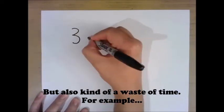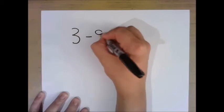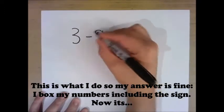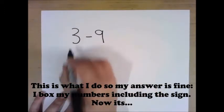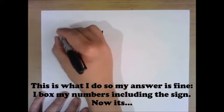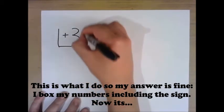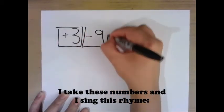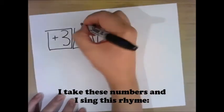For example, 3 minus 9. This is what I do, so my answer is fine. I box my numbers, including a sign. Now it's positive 3 and negative 9. I take these numbers, and I sing this rhyme.